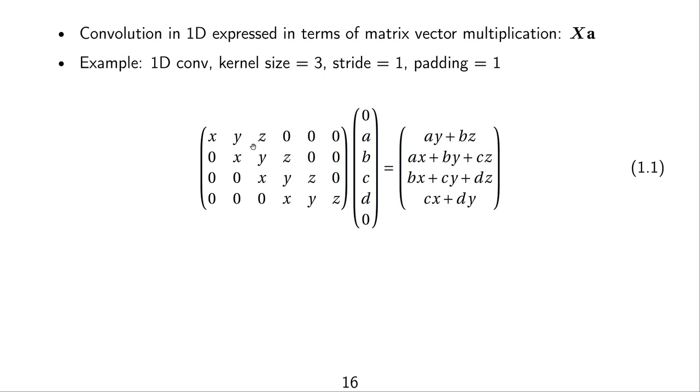If we multiply this out using the rules of matrix vector multiplication, we can verify that this to the right here is the output. Let's just do the second row multiplied with this column vector here. So, we would get x times a plus y times b plus z times c. So, that's written here in the second row of the output vector.